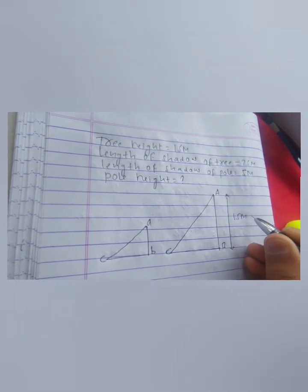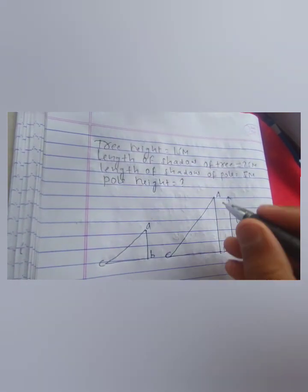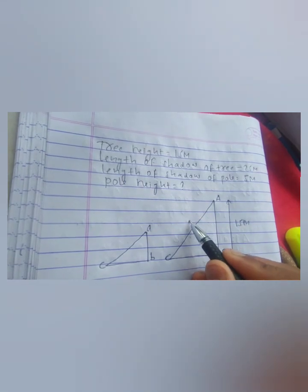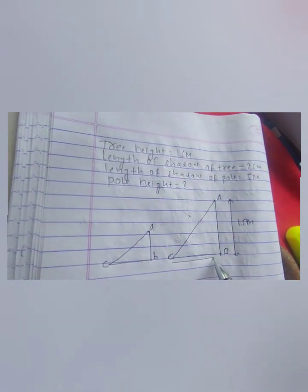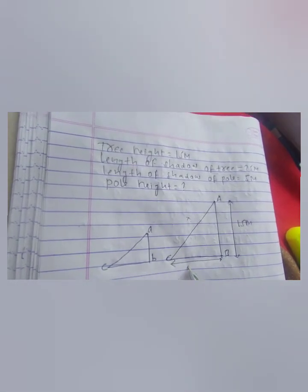Most students are confused whether to place the length of shadow on the hypotenuse or the base. You must not be confused - you have to keep the length of shadow of the tree...